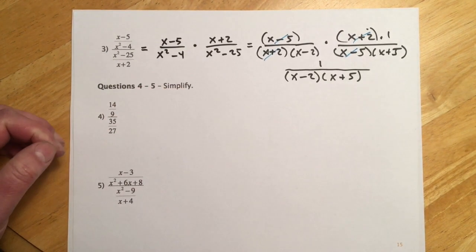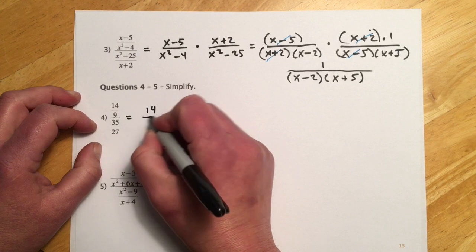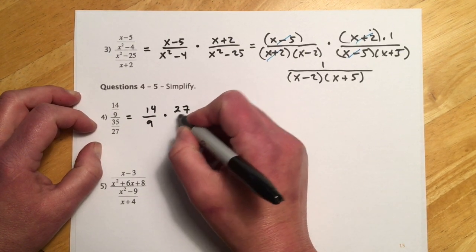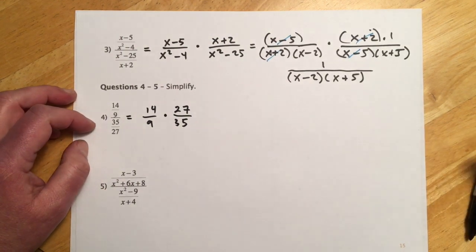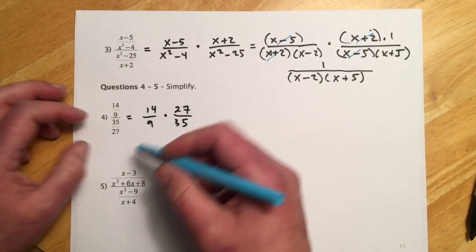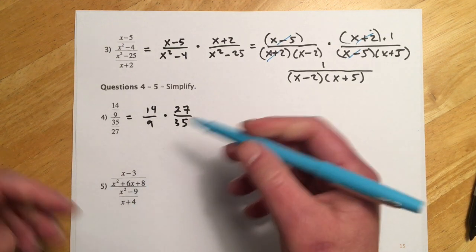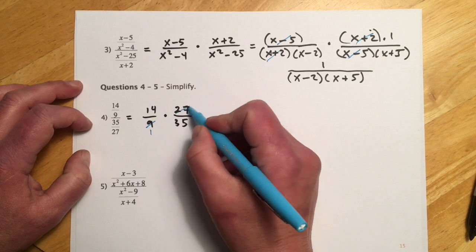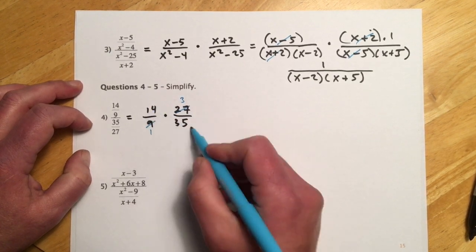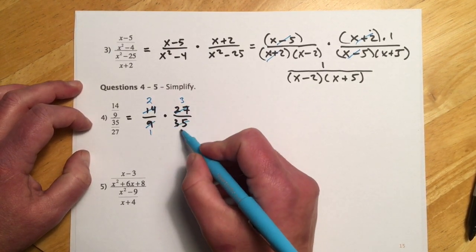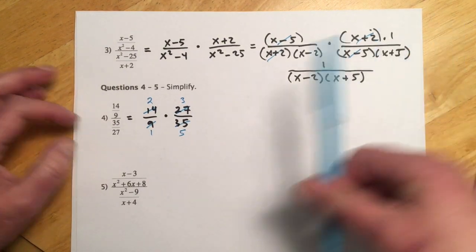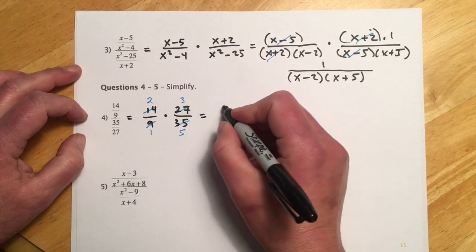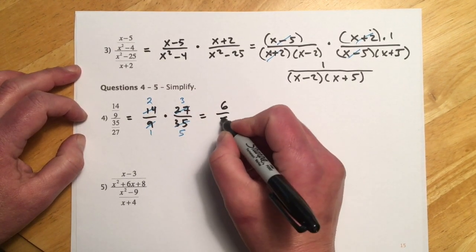The next two are ones to try. This is 14 ninths times 27 over 35. If I multiply straight out it's harder to see the canceling. From here: 9 goes into 27 three times, 7 goes into 14 twice and into 35 five times. That makes the reducing much easier. So 2 times 3 is 6, and 1 times 5 is 5.